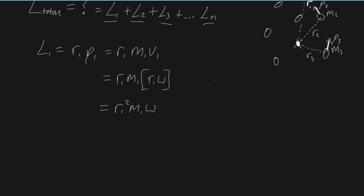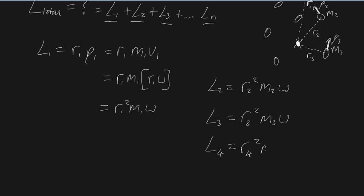And this is crucial because we can write the same thing for L2, L3, L4, all the way to Ln. So: L2 = r2² × m2 × omega, L3 = r3² × m3 × omega, and L4 = r4² × m4 × omega.